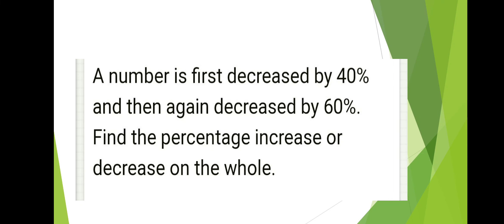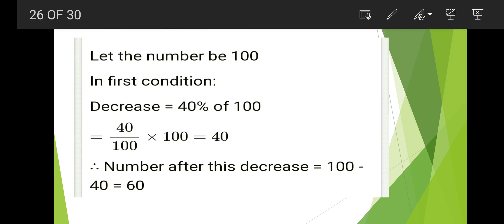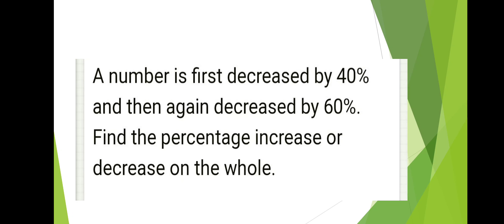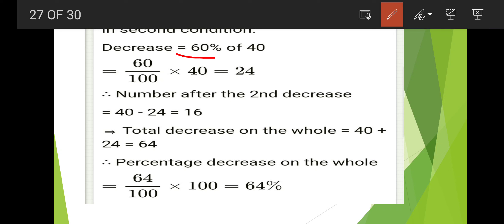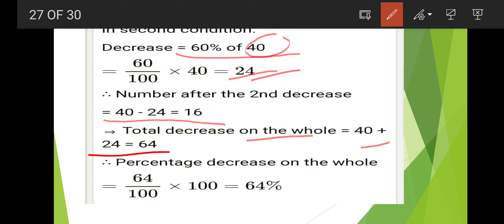Next: a number is first decreased by 40 percent and then again decreased by 60 percent. Find the percentage increase or decrease on the whole. Let the number be 100. First decrease: 40 percent of 100 equals 40, so number becomes 60. Second decrease: 60 percent of 60 equals 36, so number becomes 60 minus 36 equals 24. Wait — second decrease: 60 percent of 60 is 36, giving 24. Total decrease is 40 plus 24 equals 64. Percentage decrease on the whole is 64 percent.